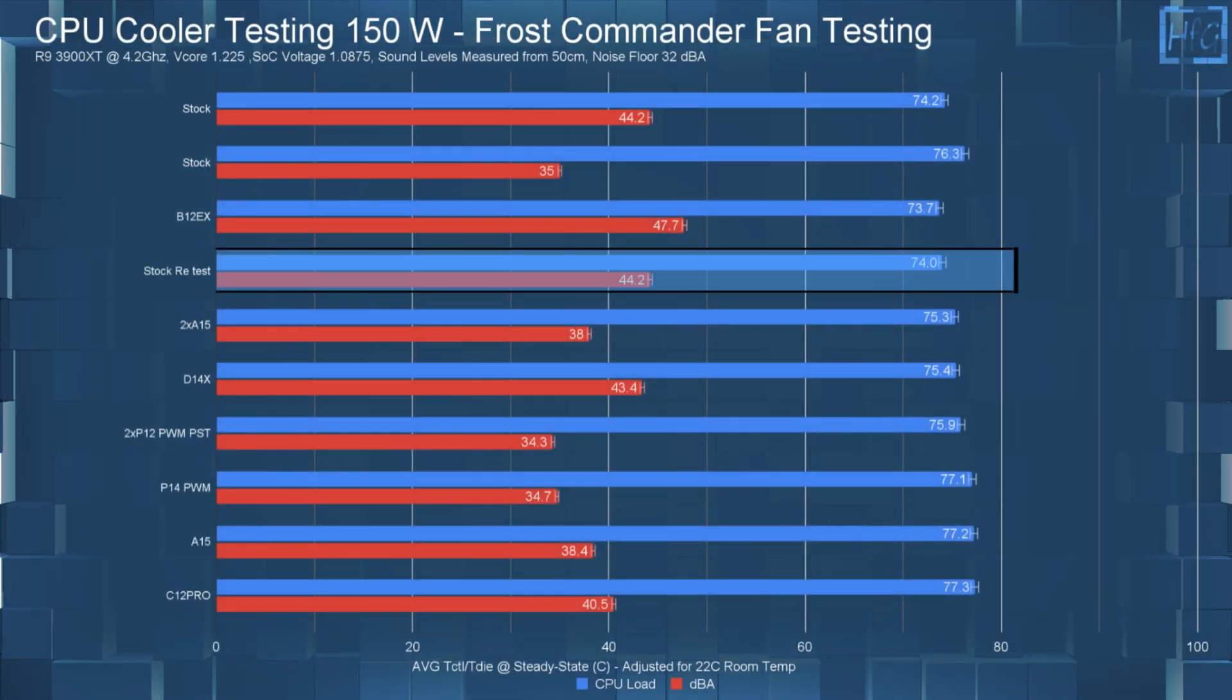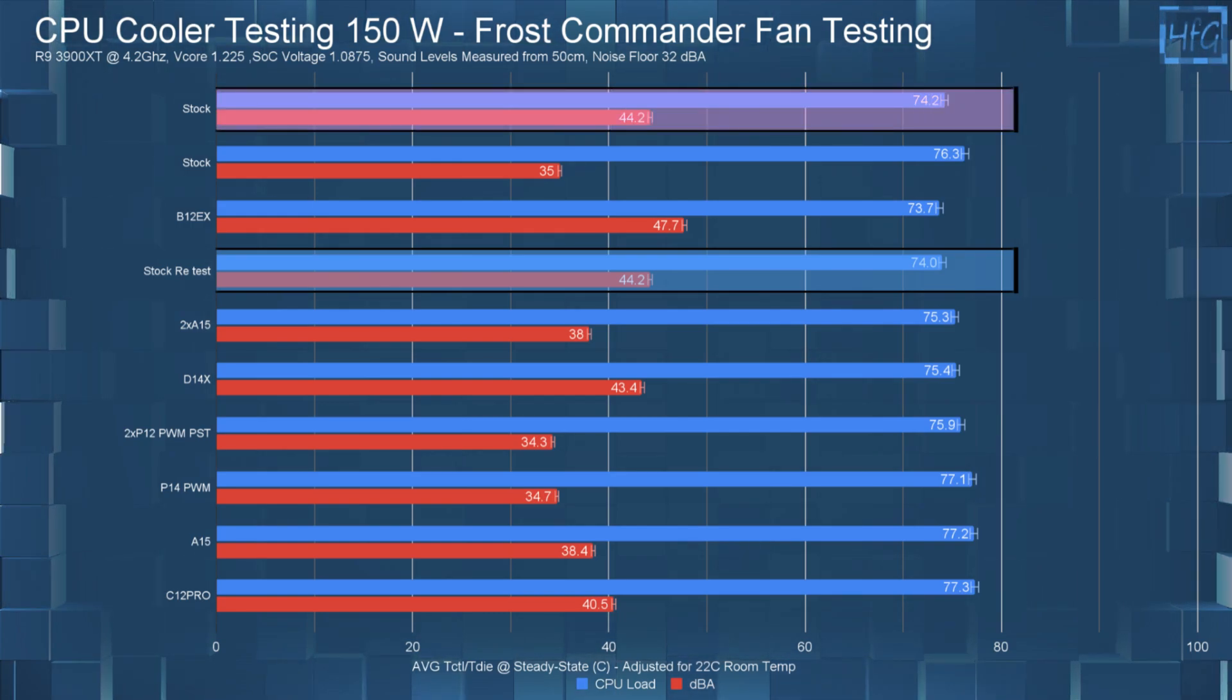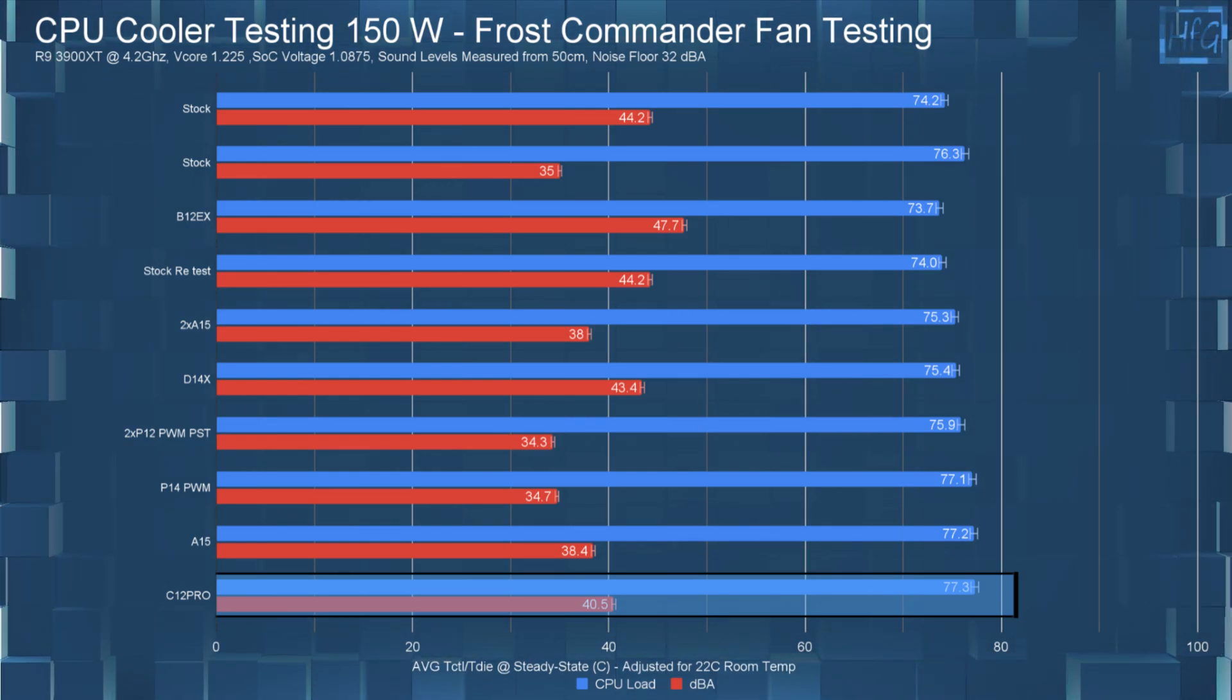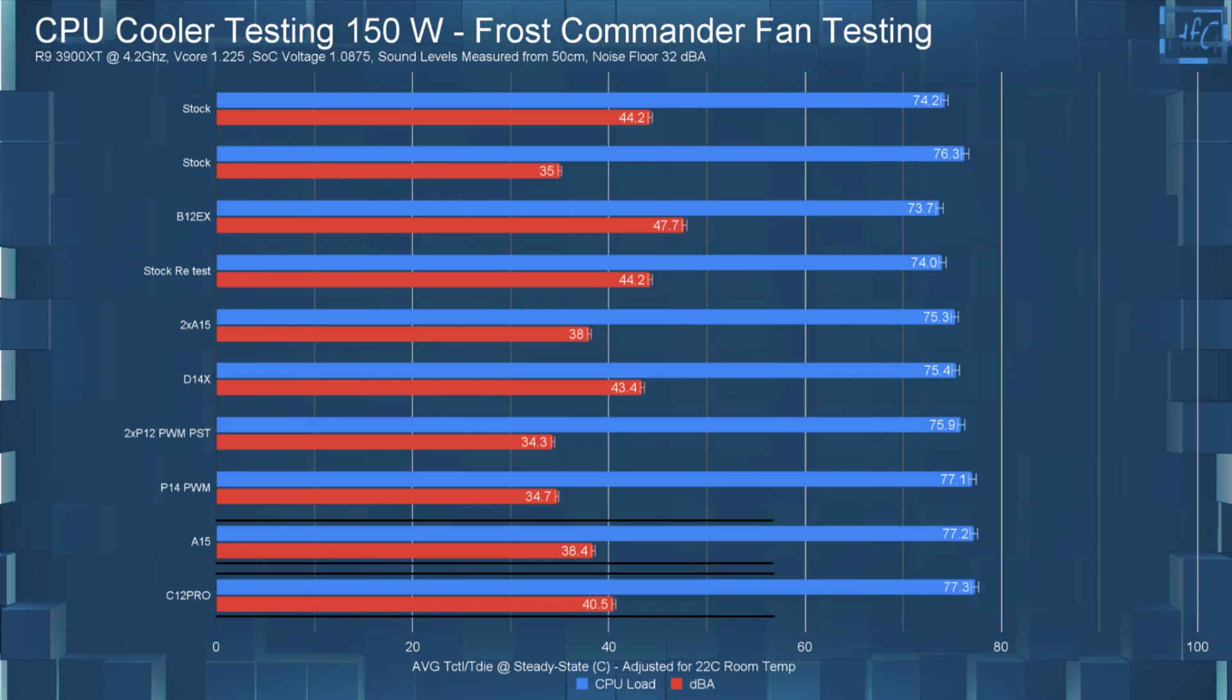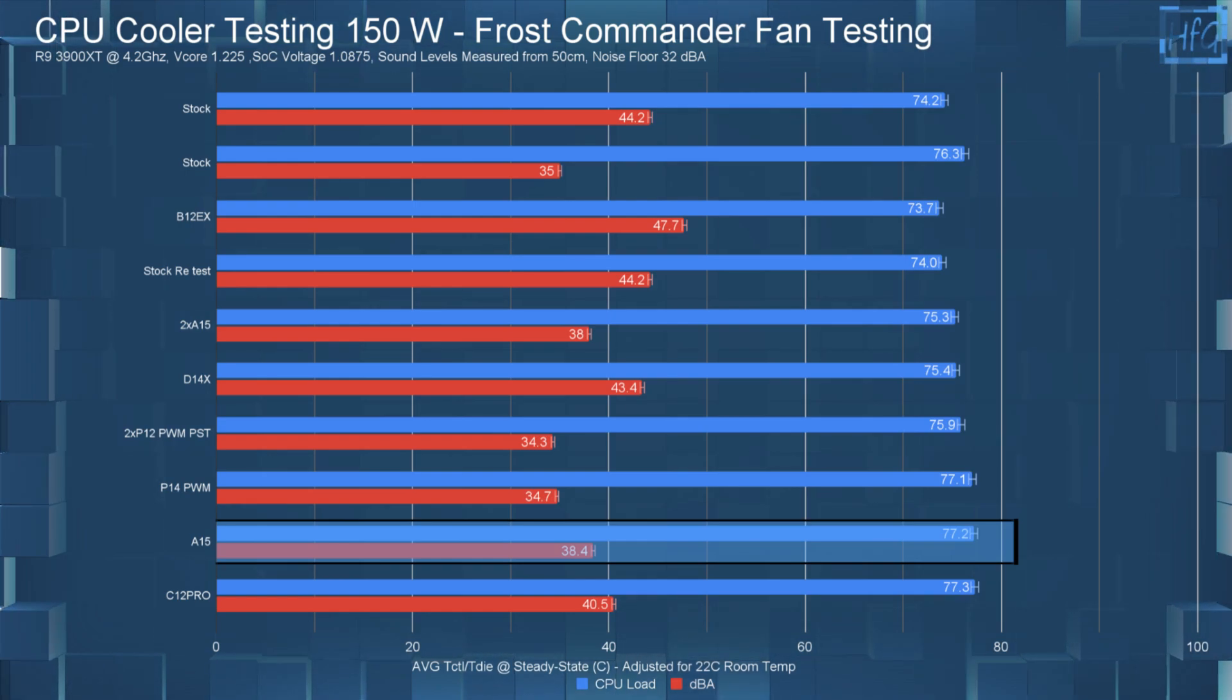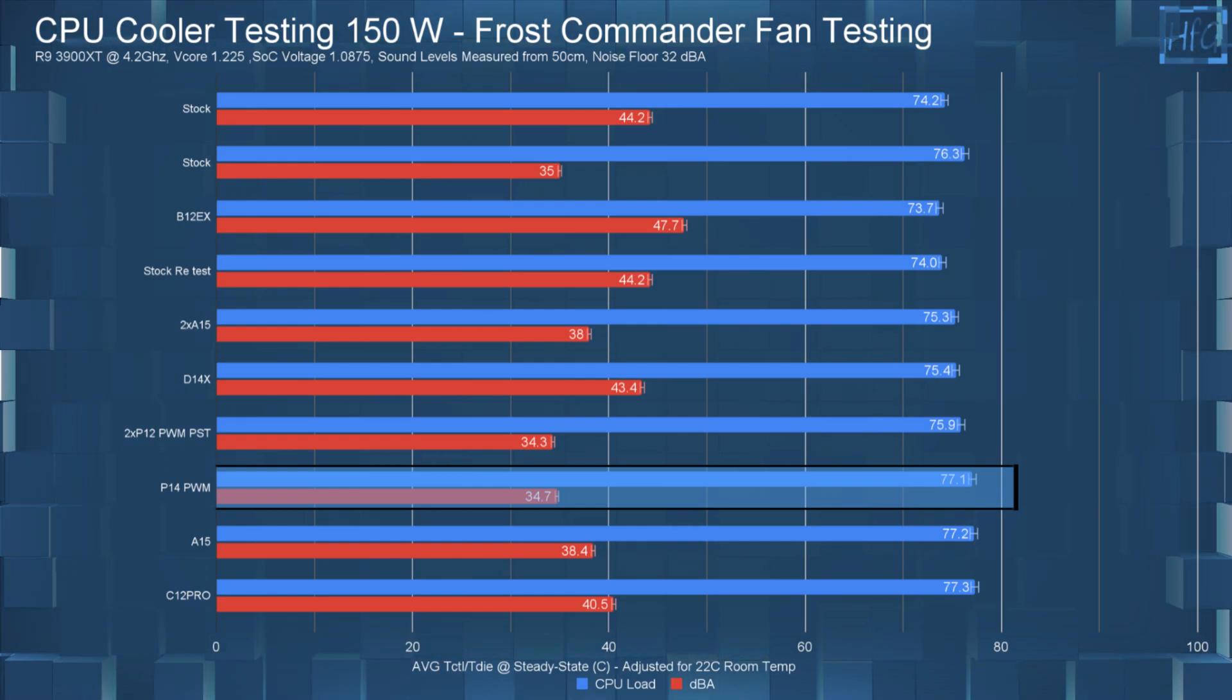So starting off with the new full-speed stock test, it does match up with my original full-speed stock test that I did a few weeks ago. Now going from the bottom up, just the C12 Pro had the CPU temperature at 77.3C with a DBA of 40.5. A single A15 had the CPU's average temperature at 77.2C with a DBA of 38.4. The Arctic P14 had a similar CPU temperature, that being 77.1C, but the DBA was only 34.7.